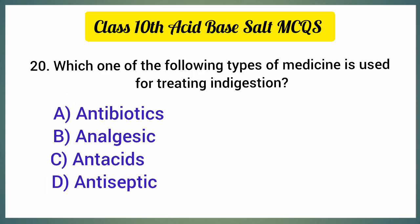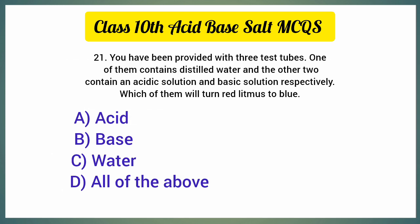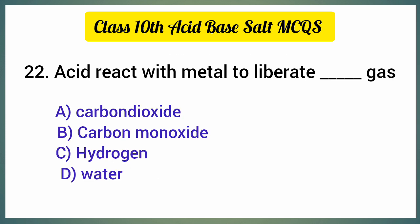Which one of the following types of medicine is used for treating indigestion? The correct option is option C, antacids. You have been provided with three test tubes — one contains distilled water, and the other two contain an acidic solution and basic solution respectively; which of them will turn red litmus to blue? The correct option is option B, base. Acid reacts with metal to liberate — dash — gas; correct option is option C, hydrogen.